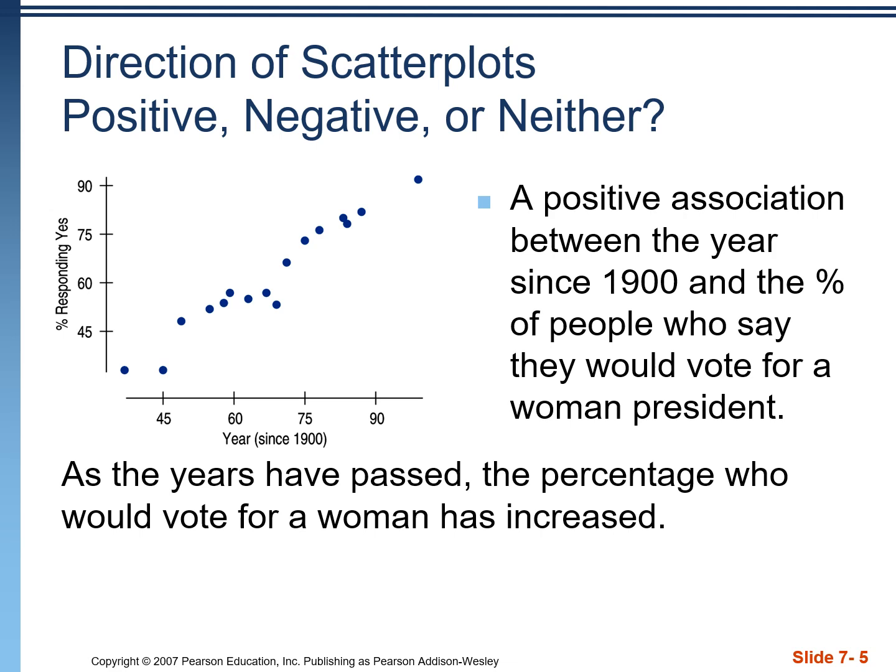In this graph here, which is showing the percent of people who respond yes to the question 'Would you vote for a female for president?', and along the x-axis we have the year since 1900, we can see that we have a positive association in those two variables.